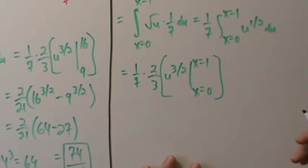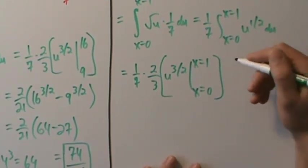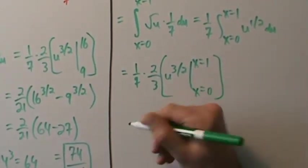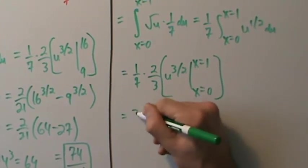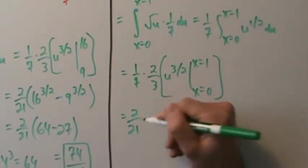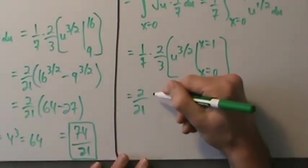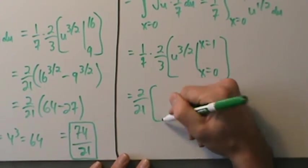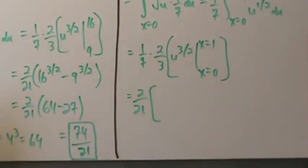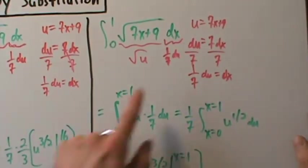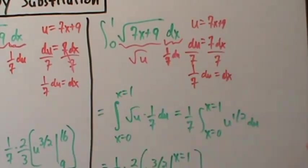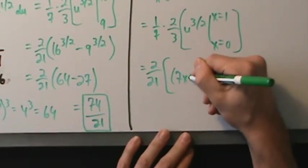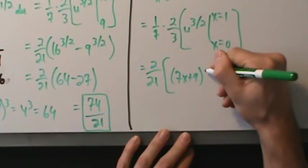So this becomes (2/21) times (7x + 9)^(3/2), because u = 7x + 9. We then evaluate that from x = 0 to x = 1.